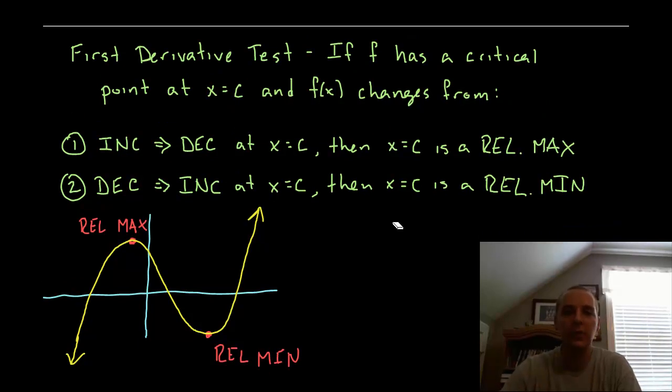So here's what the first derivative test formally says. It says if f has a critical point at C, C is a number like 2 or 3 or 7 or negative 1, and the function changes from increasing to decreasing at C, well then it's basically common sense.